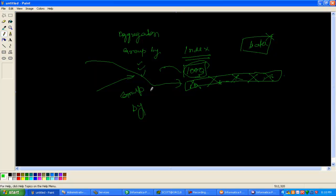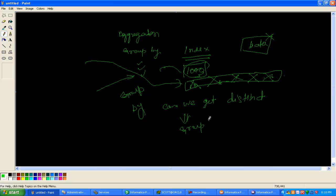Now one more scenario: can we get distinct values from aggregator? Using the sorter transformation we have a distinct option, but can we do it using aggregator? Yes, of course. If we use group by on all the ports in the aggregator, it will send only distinct records to the next transformation. Thank you for watching this video.